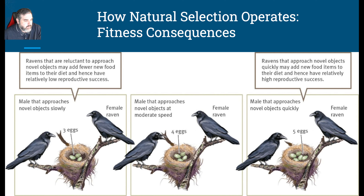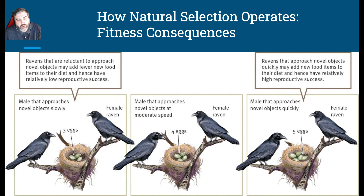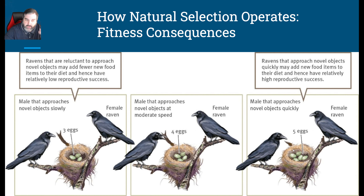Looking at this image, we have ravens: on the left they produce three eggs, in the middle four, and on the right five. The idea is that ravens reluctant to approach novel objects add fewer new food items to their diet and have relatively low reproductive success — you have to have the material in you to produce eggs. Ravens that approach very quickly get more food items and can produce more eggs. Because they're producing more eggs, they'll have more offspring, and more of those offspring will successfully grow up and go on to produce more.